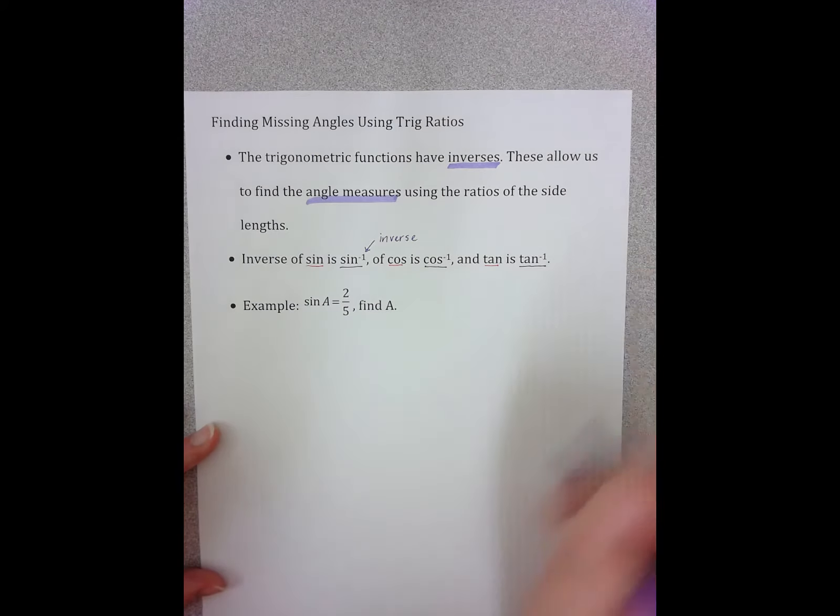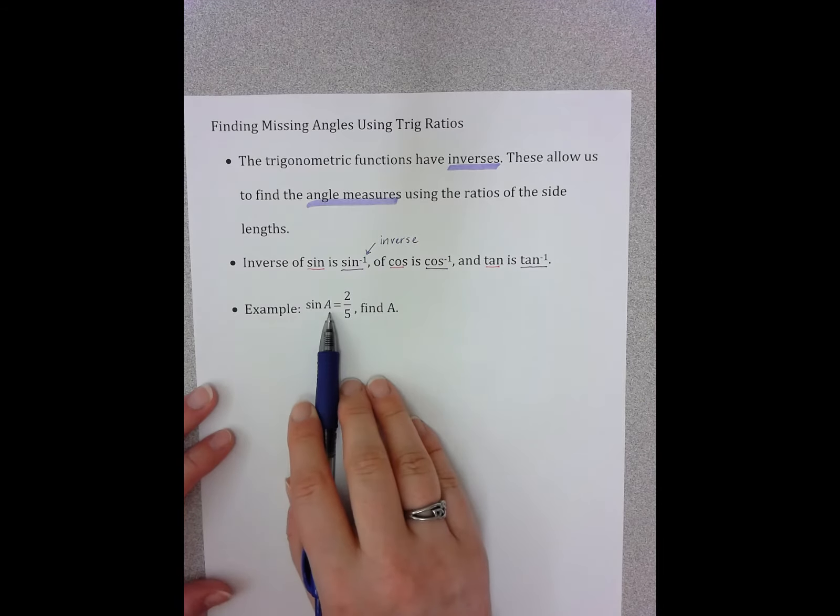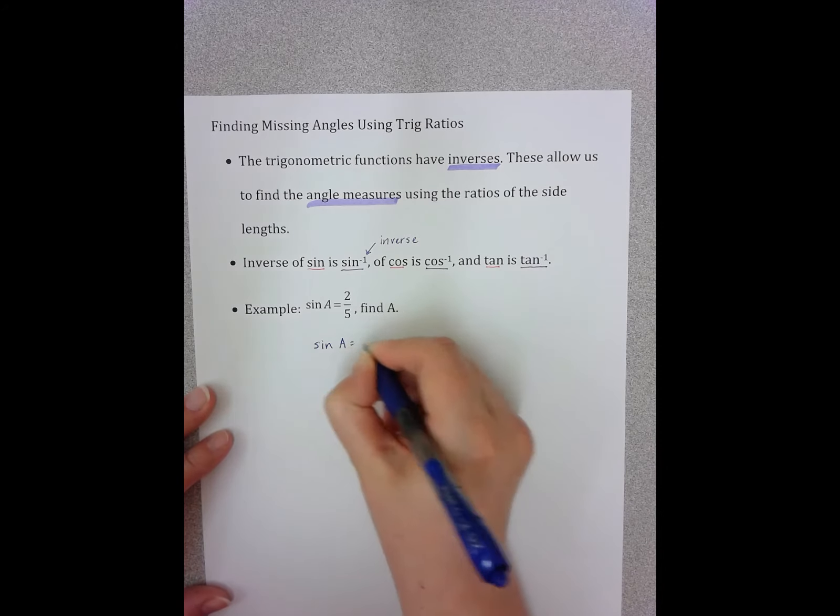So sine inverse, cosine inverse, tangent inverse. Let's look at an example. In our example, we are given the ratio for sine A, 2 over 5, and we're asked to find angle A.